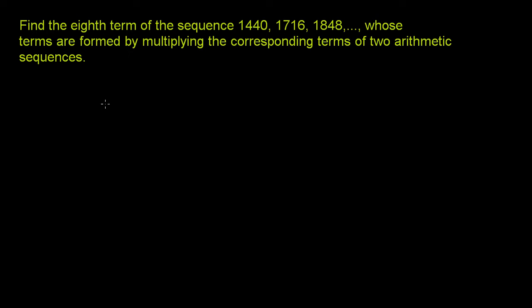Let's think about the two sequences, and then we'll take the products of corresponding terms to get the terms of this sequence. Maybe one arithmetic sequence starts with a, and the next term is a plus m — that's what an arithmetic sequence is, a constant added to each successive term. So the terms go a, a+m, a+2m, and all the way to the eighth term, which is a plus 7m.